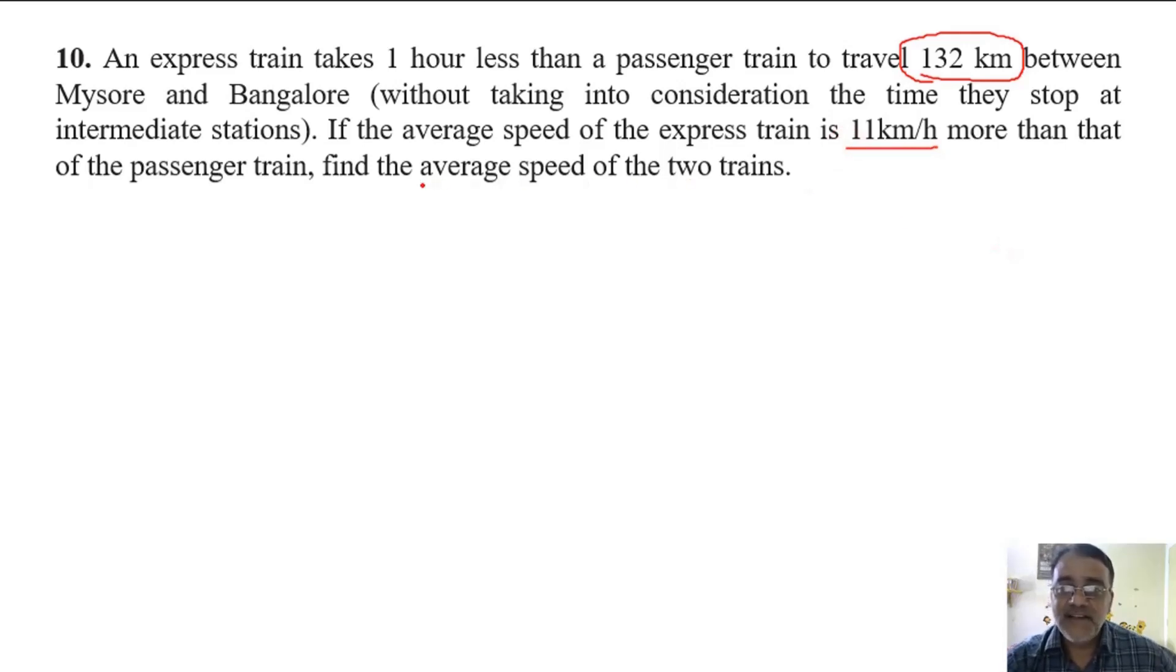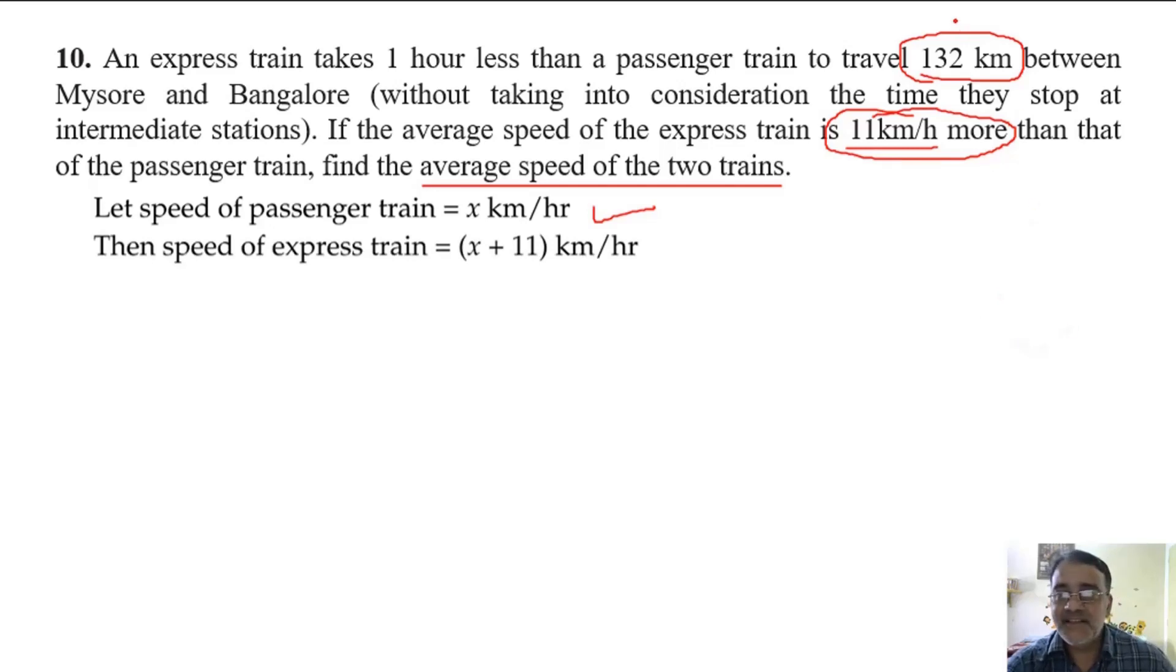So let the speed of the passenger train be x. Express train? x plus 7. And the distance is given 132 km. So what is the time taken by this one? Time taken by passenger train: distance upon speed, 132 by x. Right. Time taken by express train.